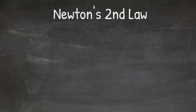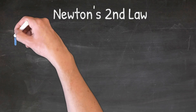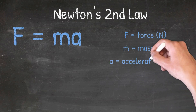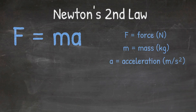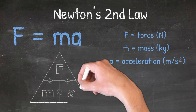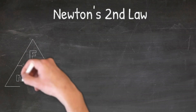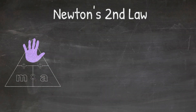The formula we use to solve Newton's second law is F equals MA, where F is force in Newtons, M is mass in kilograms, and A is acceleration in meters per second squared. We can solve this formula by knowing two of the variables and solving for the third. An easy way to solve this is to use the triangle setup. When using the triangle, cover up the letter you're solving for, and the triangle will tell you whether to multiply or divide. If I'm solving for force, I cover up the F, and the triangle tells me to multiply mass times acceleration.